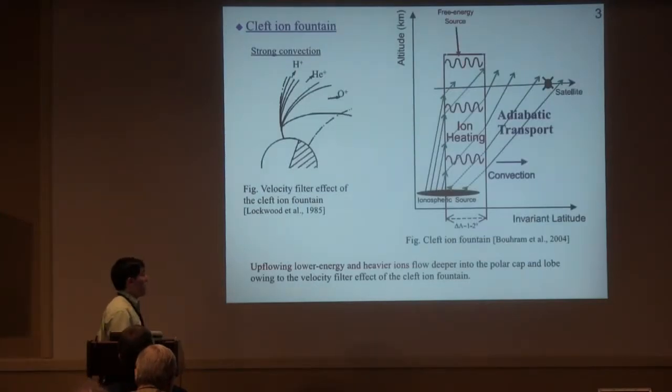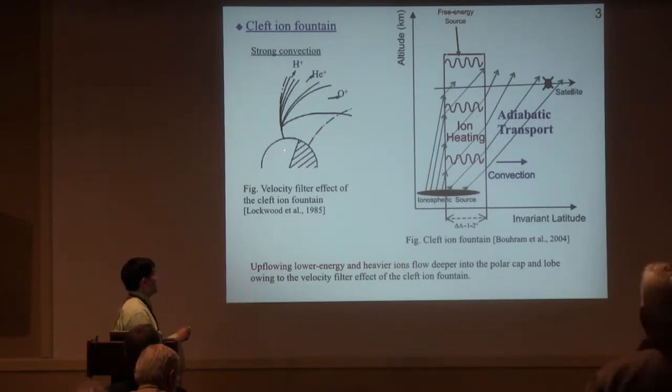One of the important outflow mechanisms, ion outflow from the dayside region called the cleft ion fountain, is suggested. This is a schematic of the cleft ion outflow. The ions come from the dayside and the fast and light ions go up.